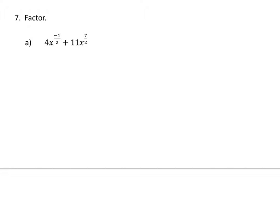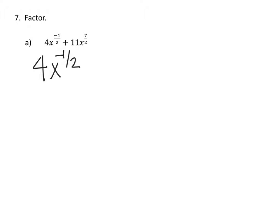I want to get a negative one-half exponent, so I'm going to keep 4x to the negative one-half the same. But I want to take x to the seven-halves and rewrite it to get a negative one-half exponent out of that.